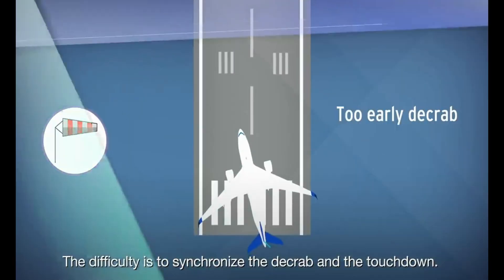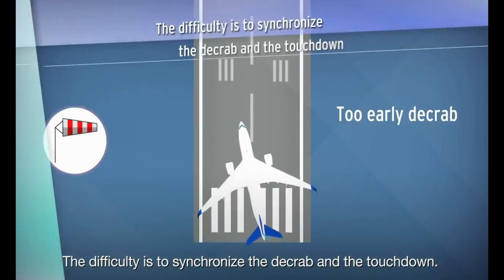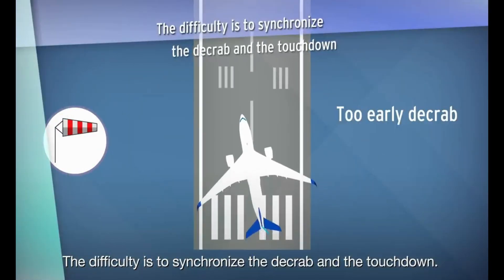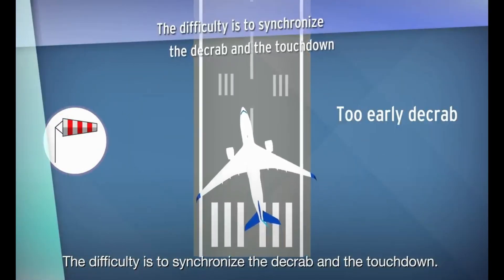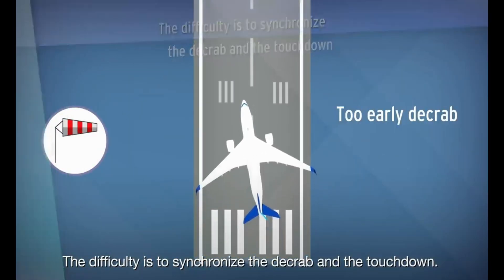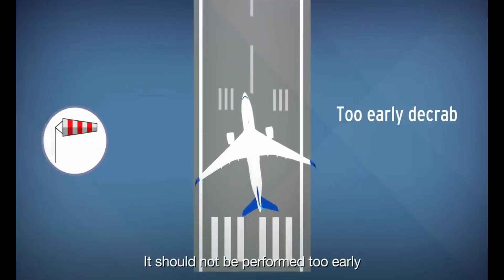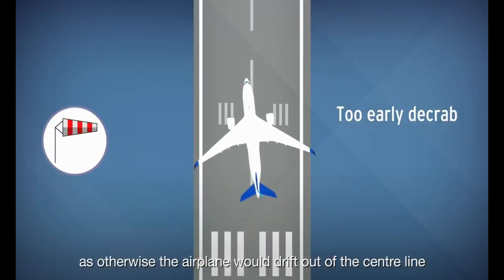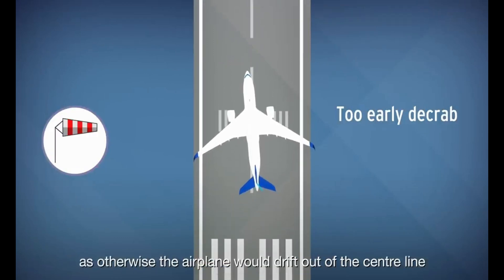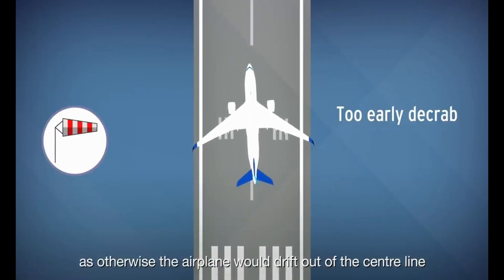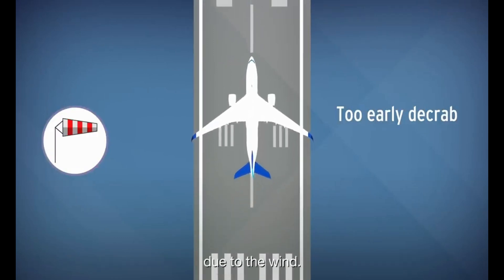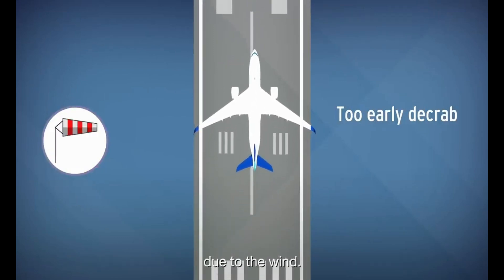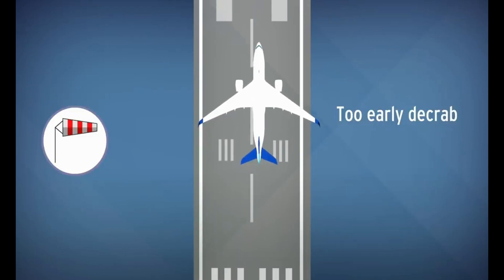The difficulty is to synchronize the decrab and the touchdown. It should not be performed too early, as otherwise the airplane would drift out of the centerline due to the wind.